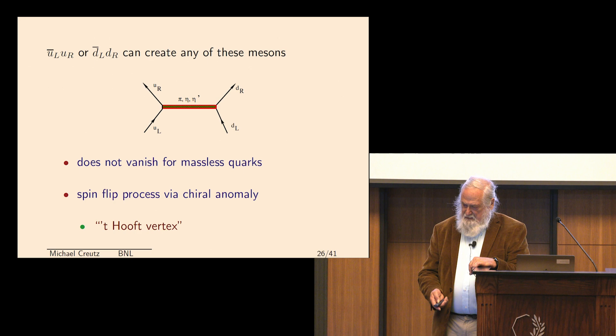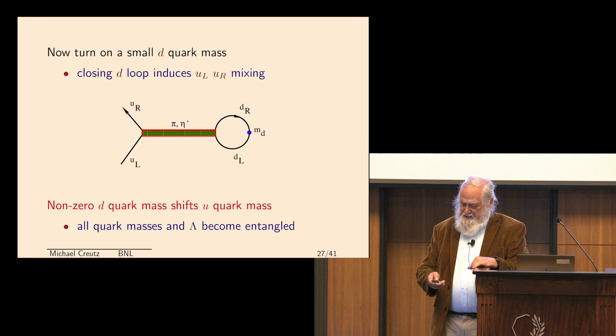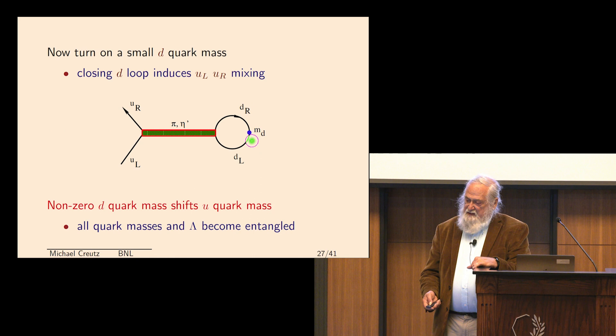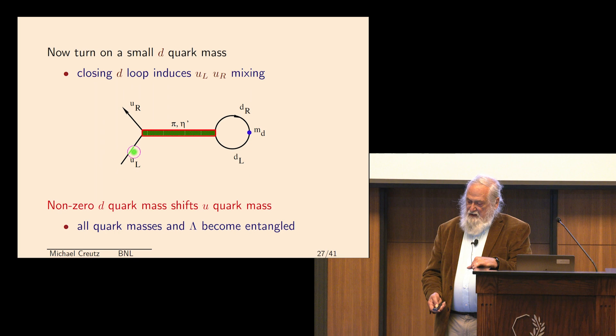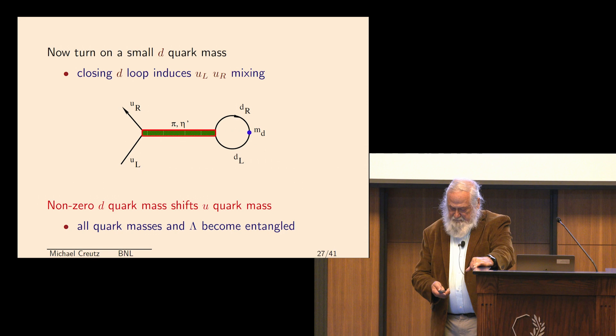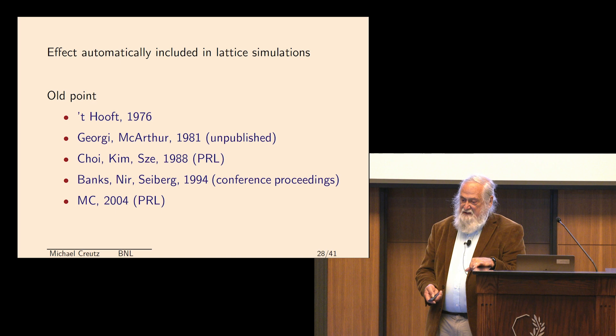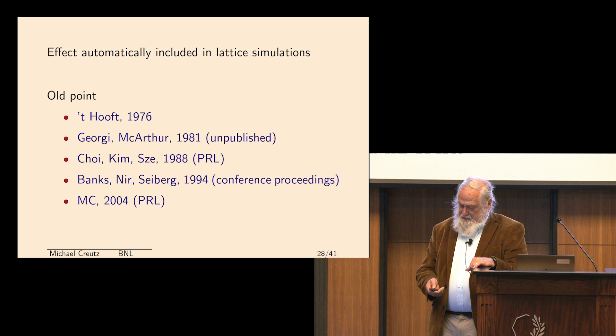All right. Supposing we now take and turn on a small down quark mass. And we do the same process of creating these mesons with that. You can always close. If it's got a little mass, you can close it off. And you discover you have a process which looks like a mass term for the up quark. So a non-vanishing down quark mass shifts the up quark mass. This means that all the quark masses and that integration constant lambda - and the integration constant lambda gets in there because the eta prime is in here - they all are a bit entangled. So it's a little tricky to separate them. And this has been pointed out many times by many people. I think most importantly by 't Hooft back in 76.